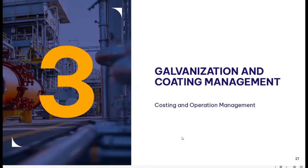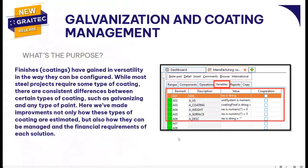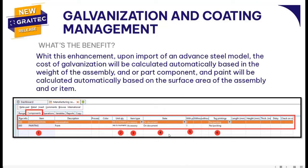Moving on to what's new for 2025: we'll take a look at galvanization and coating management enhancements. In this latest release, we are able to factor in the costs for coating and galvanization automatically upon import. Based on the surface area of the assemblies, we can calculate the cost for paint, and based on the weight of assemblies, we can calculate the cost of galvanization. You would pre-define these costs within the item codes themselves, and upon import for quotes and customer orders, we're able to calculate this — compiling the information automatically without requiring any manual calculations for your quotes.